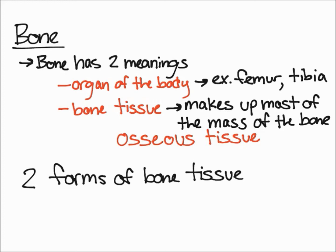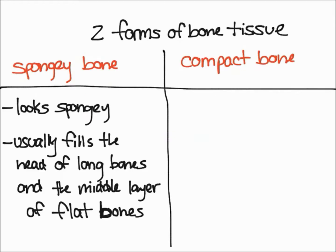Let's start with spongy bone. Spongy bone looks spongy in appearance — it looks like there are many pores, essentially just like a sponge. However, this doesn't mean that the bone is soft; that's kind of the misleading thing. You can usually find spongy bone in the head of long bones, meaning the ends. For example, in your femur, you would find spongy bone in the region close to your hip and in the region close to your knee.